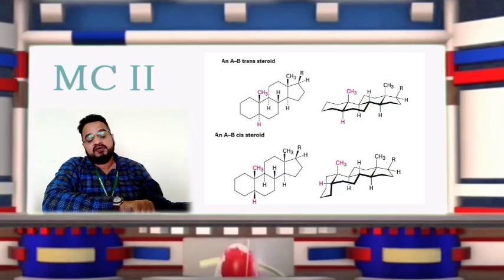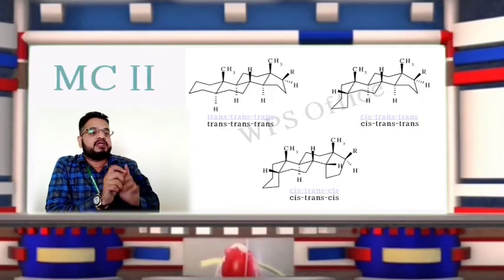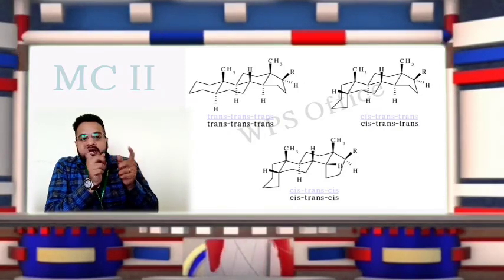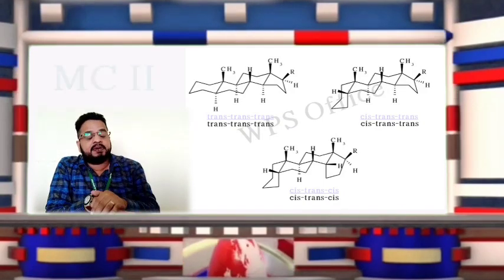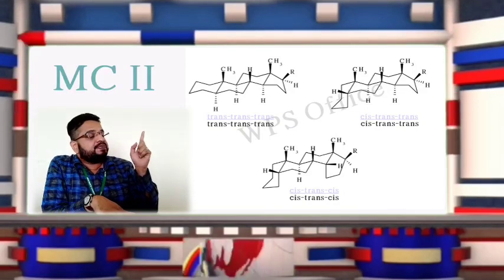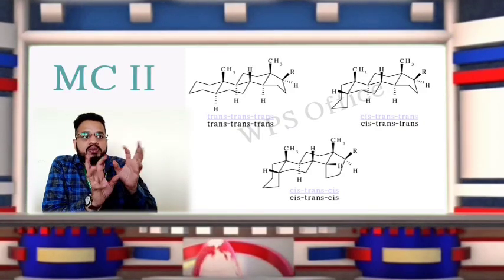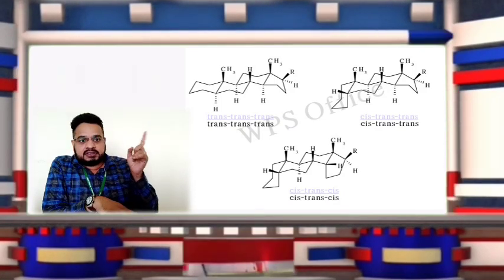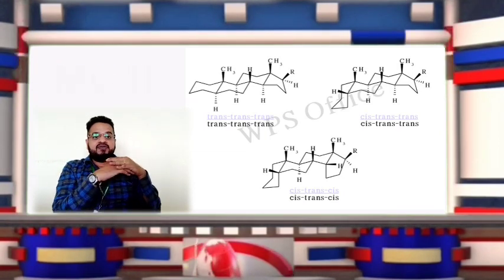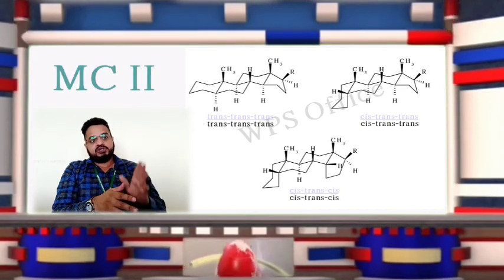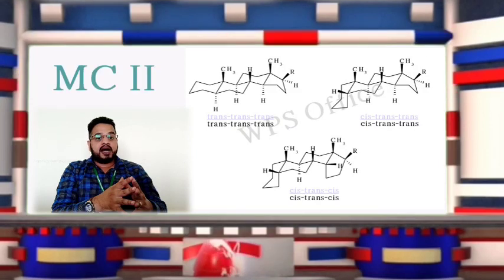Now checking the entire molecule: rings A, B, and C are always in chair conformation, and the D cyclopentane ring is in half chair conformation for stability. Looking at the three-dimensional structures of the three most common isomers, in the first isomer, A and B are fused in trans, B and C in trans, and C and D also in trans — making it the trans-trans-trans isomer.